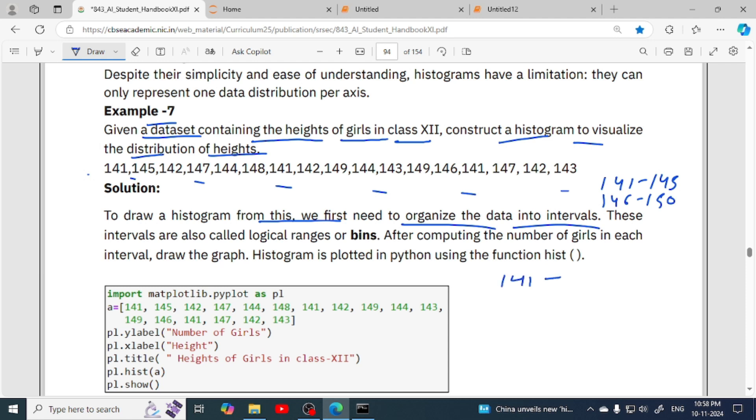But it is a small dataset, so we'll find individual data frequency, like 141 then 142 has how many girls. For 141 there are three girls, for 142 if you count there are three girls, similarly for 149 we will count, and then we will plot the data. These data intervals are called logical ranges or bins.